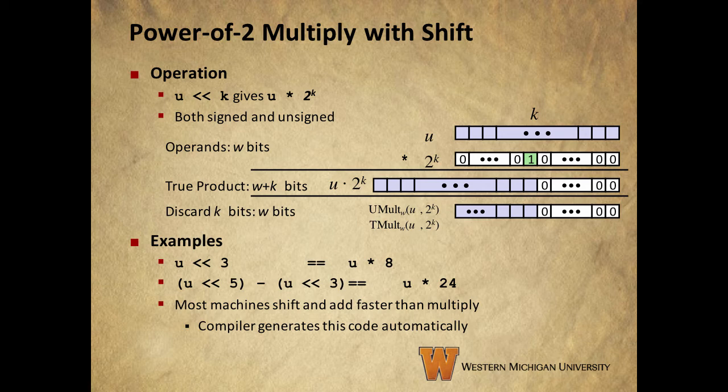Most machines shift and add faster than directly multiplying, so this is very handy. Now, compilers generate this code for us automatically, so we generally don't have to do this directly, but we want to make sure we understand how it works.